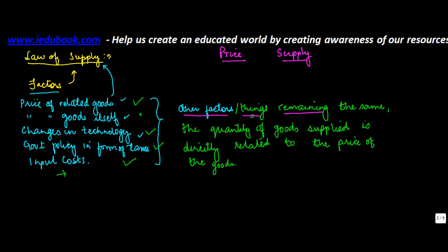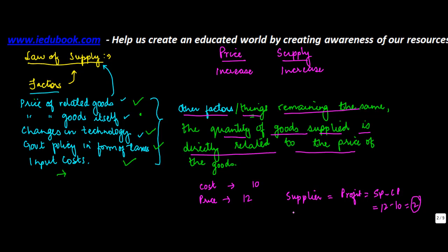Let's read this: other factors remaining the same, the quantity of goods supplied is directly related to the price of the goods. What does this mean? So if the price of the goods increases, the supplier will benefit more if he sells more, so therefore he will also increase the supply of goods. Why? Let me explain. Let's say the cost of making a good is 10 rupees. If the price is 12, the supplier or seller is going to make a profit of what? Profit is selling price minus cost price. Selling price is 12, cost price is 10, so profit equals 2.